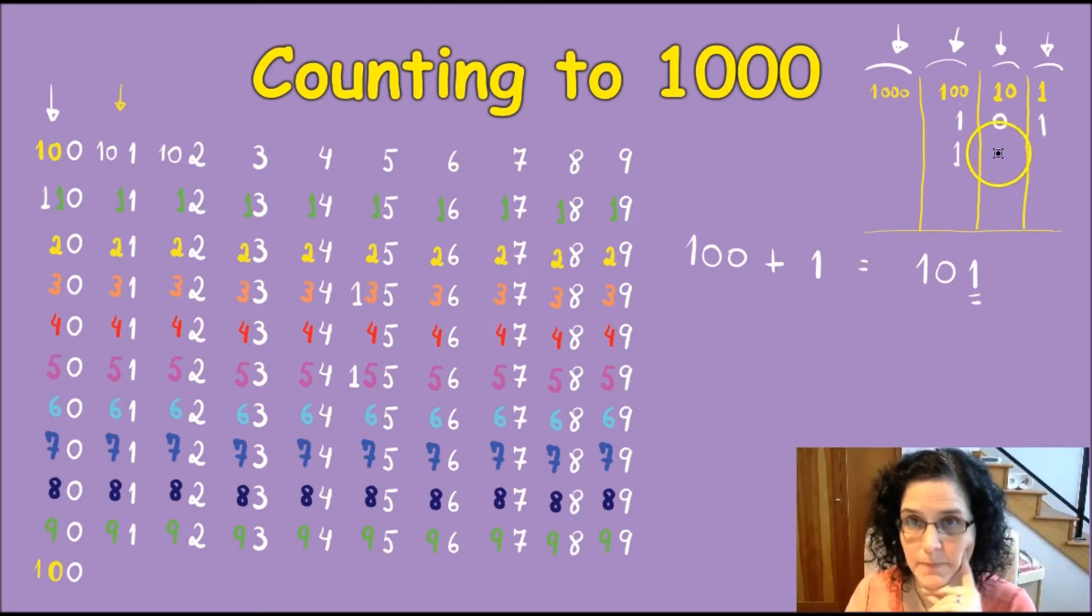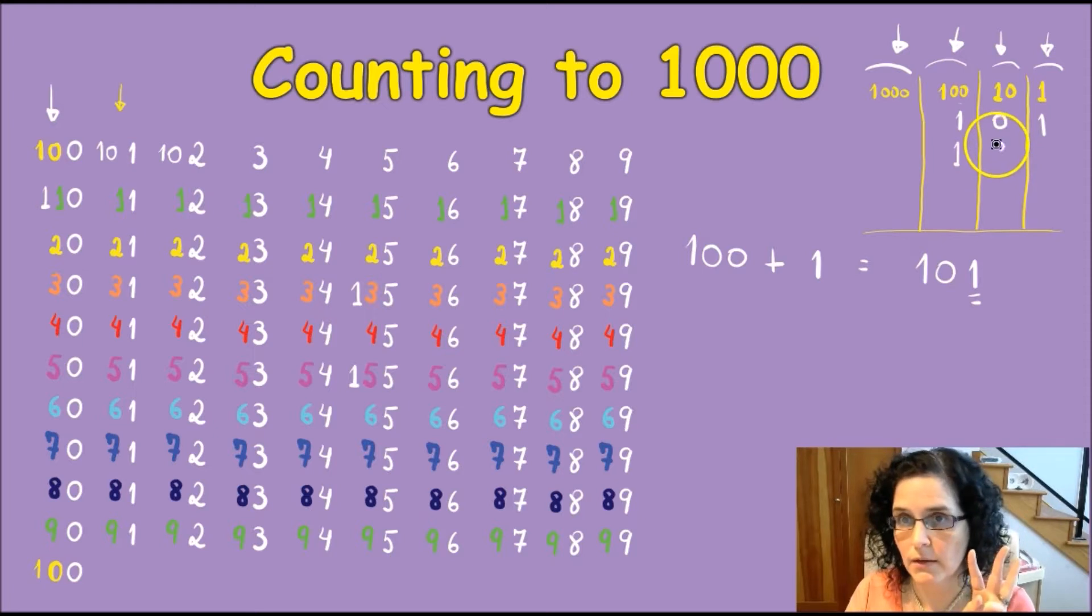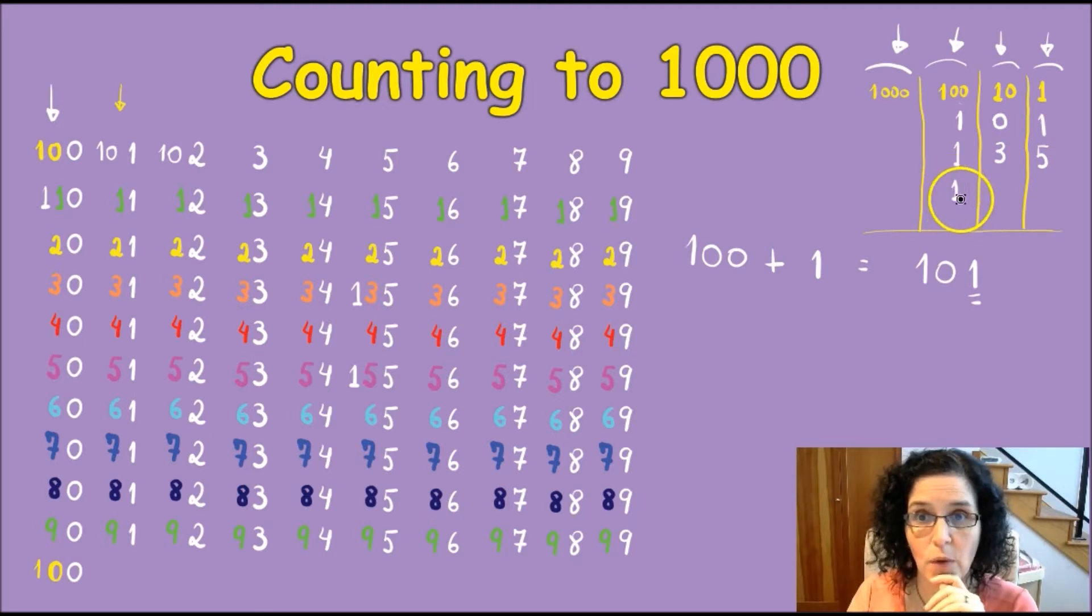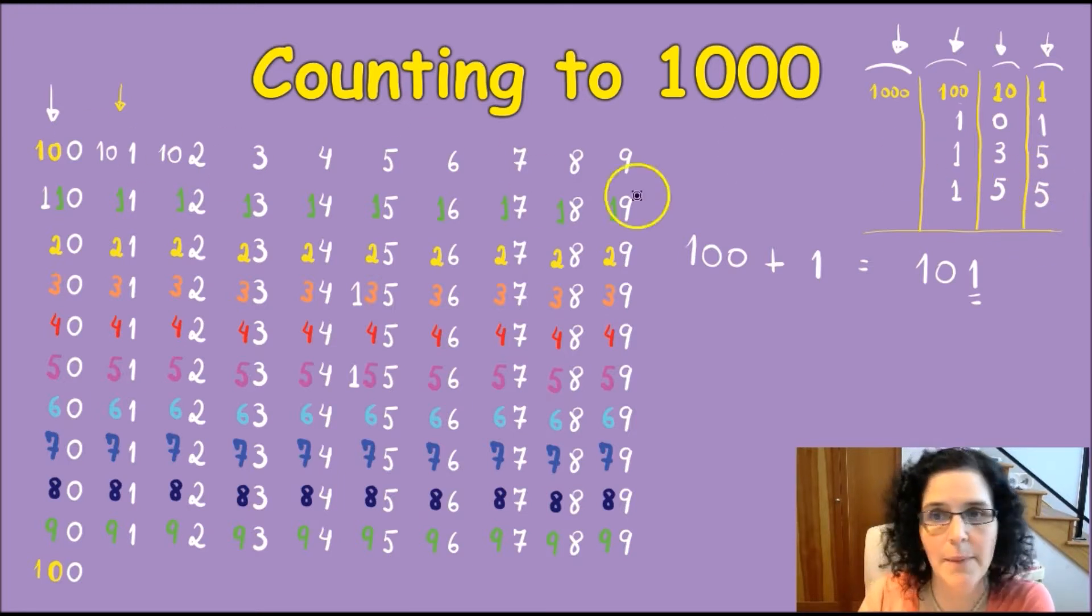So I have one 100, and then I have three on my tens, and I have five. Same thing with 155. I have one, I have five groups of 10, and five units. So that's going to happen throughout the whole thing.